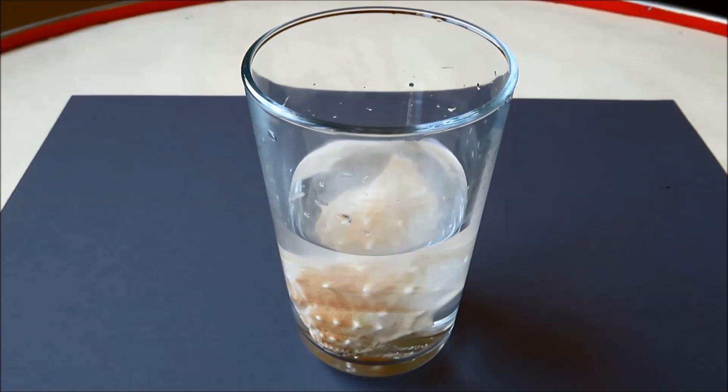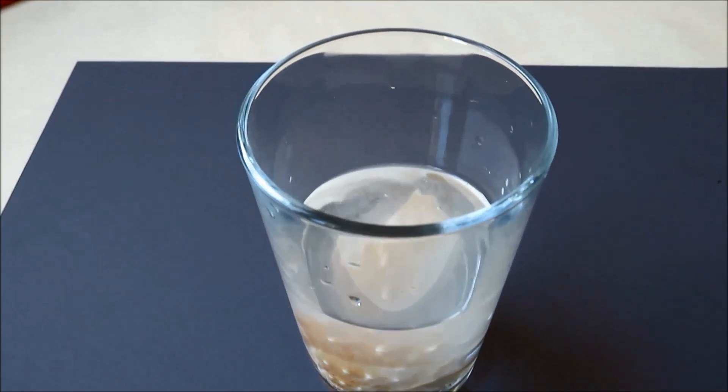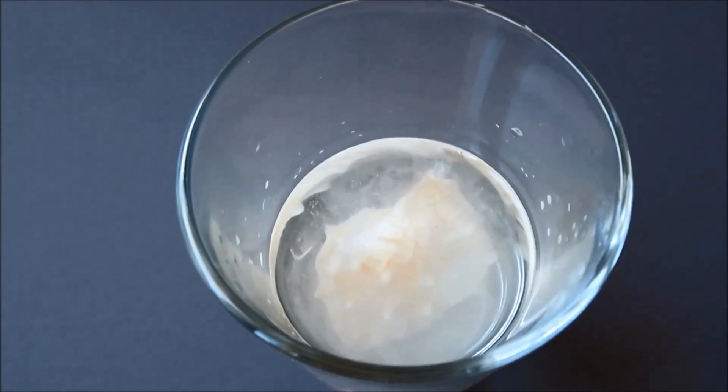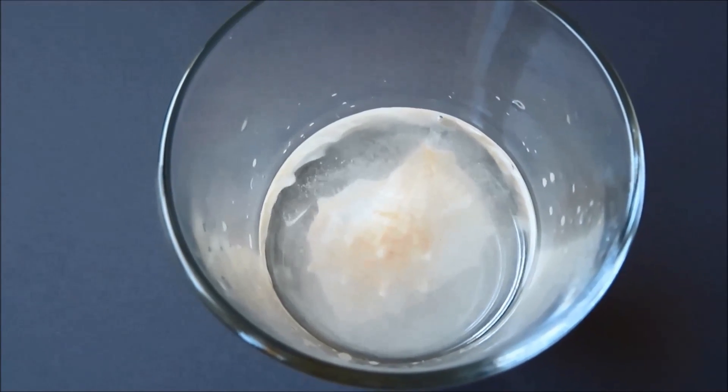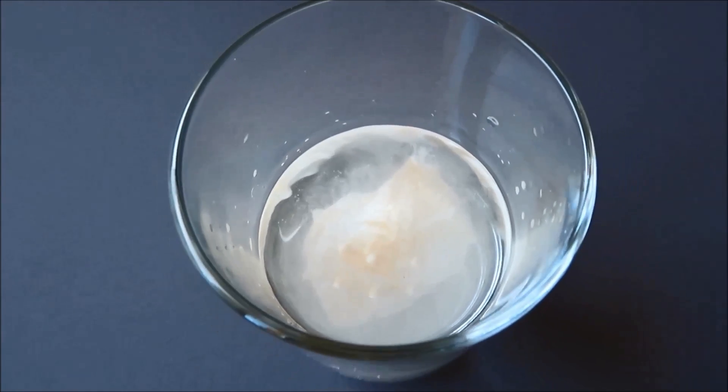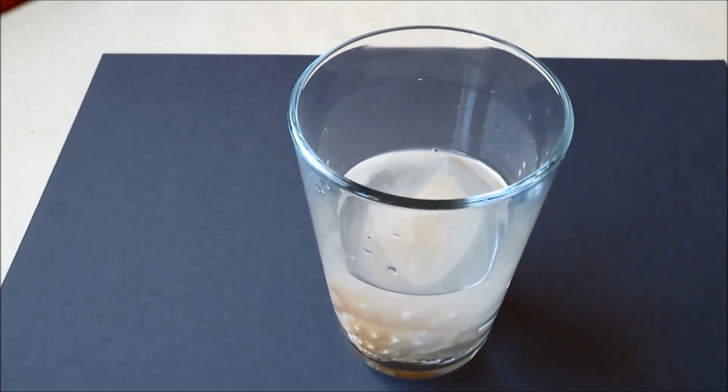Immediately we can see that tiny bubbles start to form on the surface of the shell that make their way up through the vinegar into the air. And even on the inside of the shell where the vinegar gets inside, these bubbles form and leave the shell as larger accumulated bubbles.